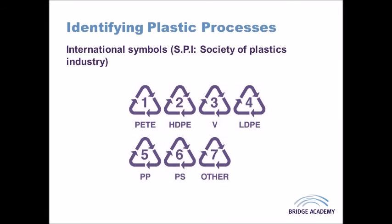Another thing to look for on any plastic product is the international symbols, or SPI codes, found on the underside or somewhere away from view. These codes range from number 1 for polyethylene terephthalate up to number 7 for polymers that don't fit other categories. They help consumers identify the material type and allow products to be sorted for effective recycling without causing contamination to the overall collected load.